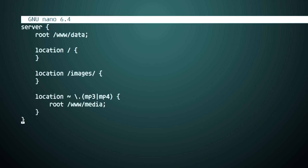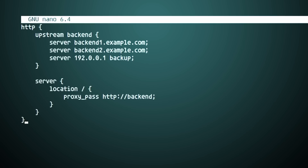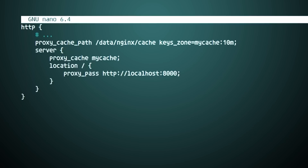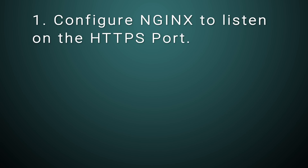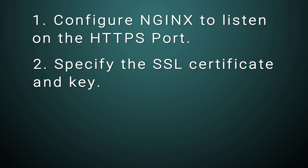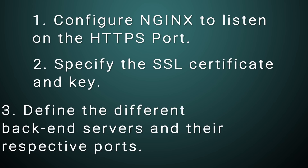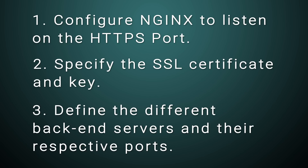One popular tool for performing reverse proxy services is NGINX. While NGINX is an open source web server, it can be used as a reverse proxy, a load balancer, or an HTTP cache. This is especially useful if you already have an NGINX deployment and you want to make the most out of your infrastructure. Using NGINX can help expose multiple services over HTTPS using reverse proxy. To achieve this, you would first need to configure NGINX to listen on the HTTPS port and specify the SSL certificate and key. Once SSL is enabled, you can then define the different backend servers and their respective ports.